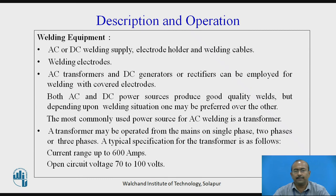Welding equipment consists of AC or DC welding supply, electrode holder and welding cables, and welding electrodes. An AC transformer, DC generator, or rectifier can be employed for welding with a covered electrode. A transformer may be operated from mains on single phase, two phase, or three phase supply. A typical specification of the transformer may be a current range up to 600 amperes and open circuit voltage of 70 to 100 volts.